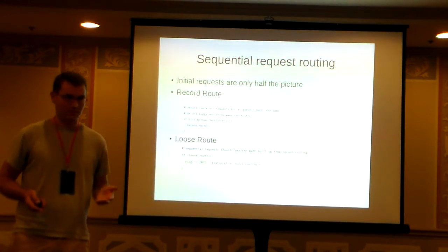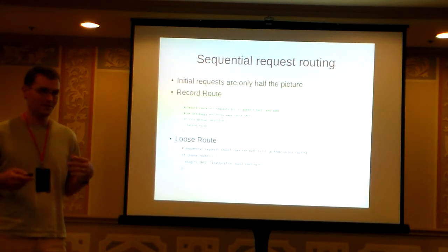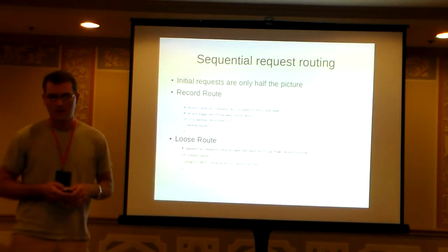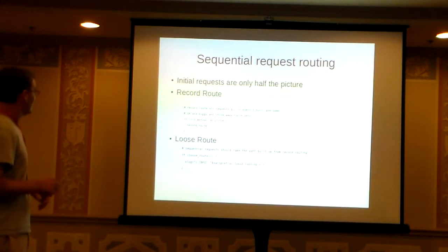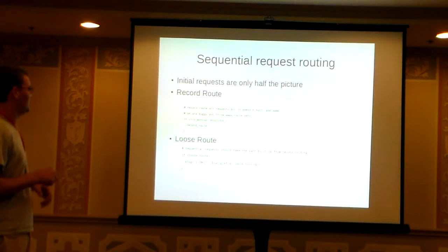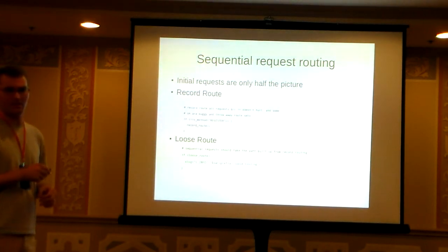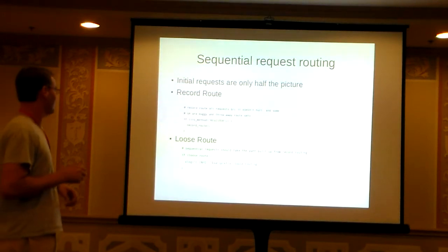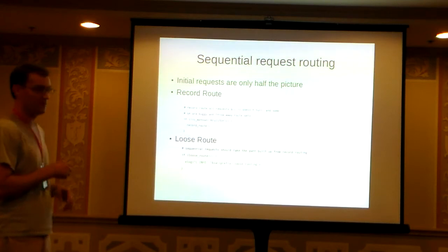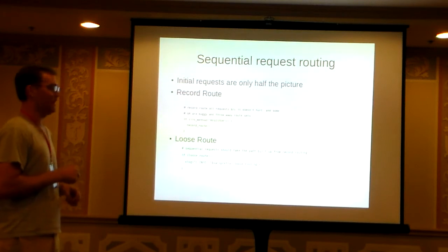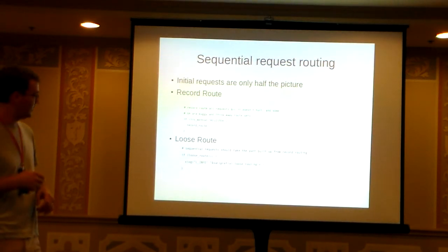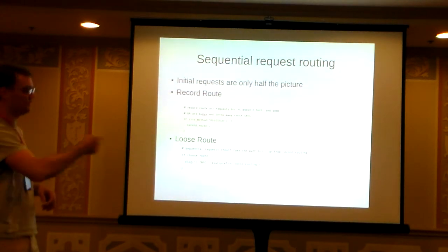That's only half the picture as far as SIP signaling is concerned. There are often times when you need to send sequential requests, like sending a BYE to terminate a call. That's why we use record route and loose routing. I'd actually probably change this to record route any requests that create a dialog. If any other requests are dialog-forming, we record route them, which inserts route headers. Then when we receive sequential requests, we loose route — this builds up a complete routing picture and conveys it back to the originating UAC.